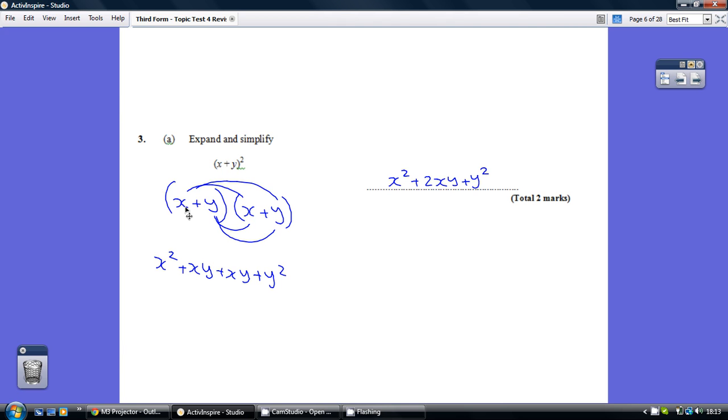Remember how this works: you take the first term in the first bracket and multiply that with both terms in the second bracket, so x times x and x times y, giving us x squared plus xy. Then move on to the second term in the first bracket and times that with both terms in the second bracket, so y times x, which can be thought of as x times y, so another xy, and then finally y times y is y squared.